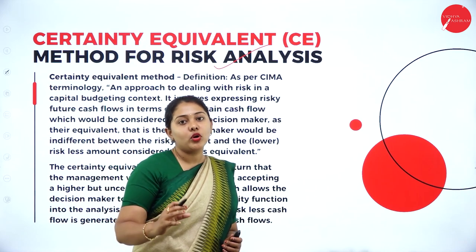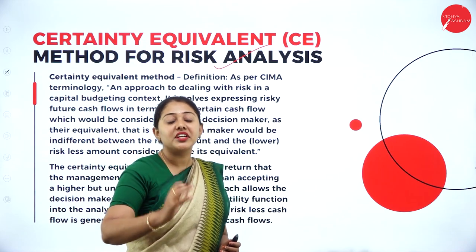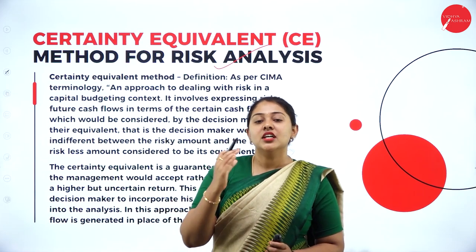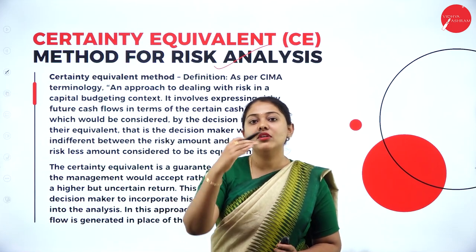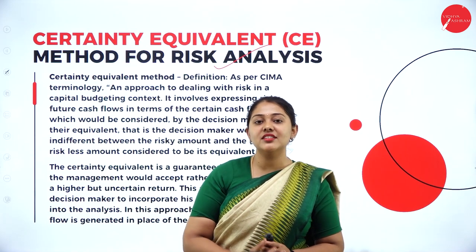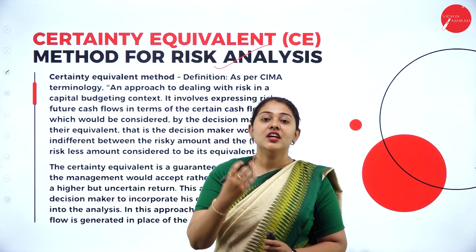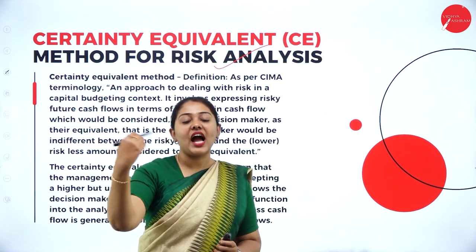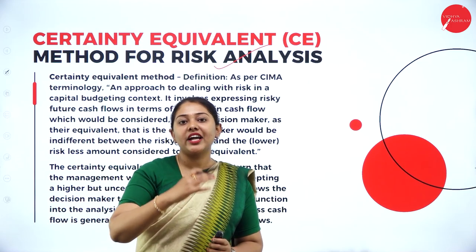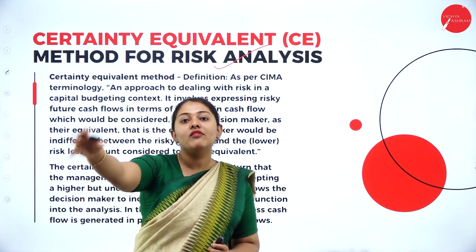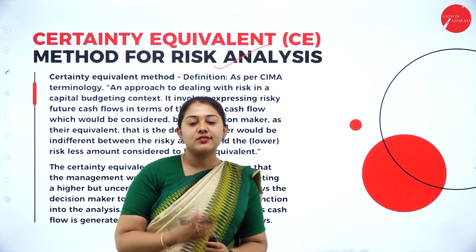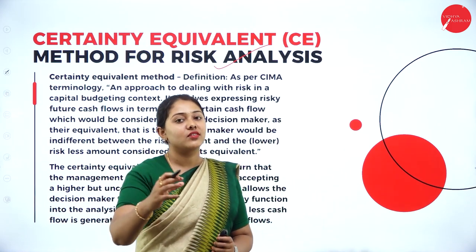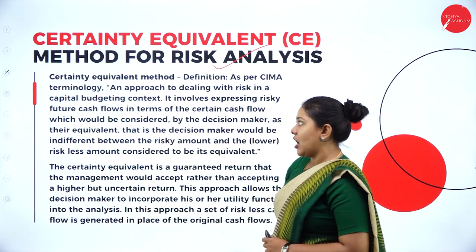In a project, a certain amount of return is expected. The risk perception here is that they take up the expected amount rather than the unexpected amount, because it is equivalent to taking up the risk. Higher the risk, higher the return — but at the same time, if this lesser amount is taken, it is equivalent to taking up the risk. Thinking these points in mind, we have a method to adjust the risk, which is your certainty equivalent approach.